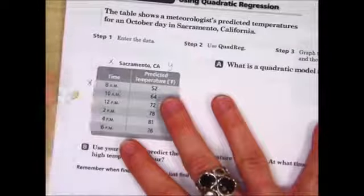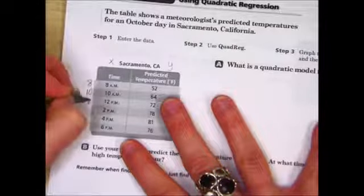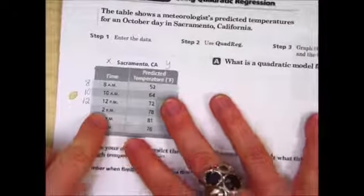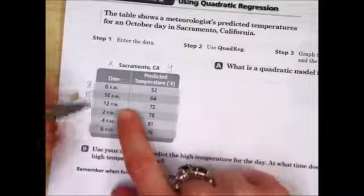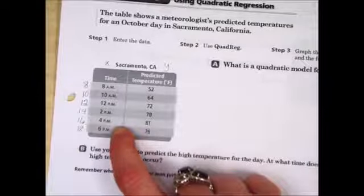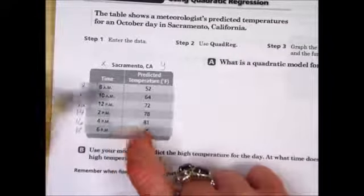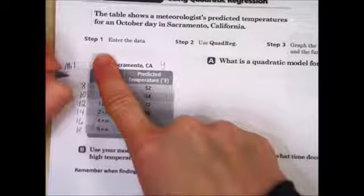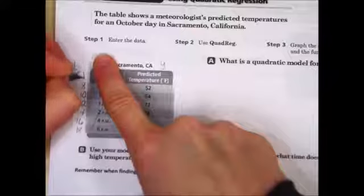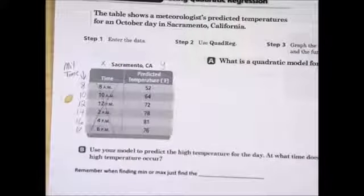So yes, we will keep 8 a.m. as 8, we will keep 10 a.m. as 10, and we will keep 12 p.m. as 12. But unfortunately, if we type 2, your calculator doesn't know that you mean 2 p.m. versus 2 a.m. So 2 p.m. in military time is 14, 4 p.m. is 16, and 6 p.m. is 18 hours. And that is to allow your calculator to understand the difference between the hours.